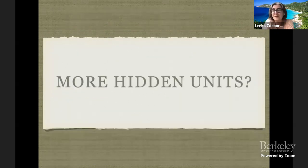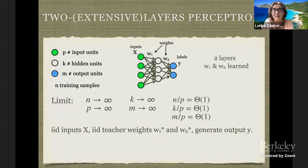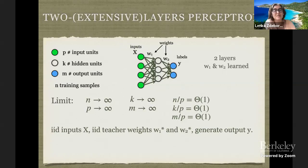So far we were dealing with order-one hidden units, but that doesn't seem to get us very far towards more state-of-the-art deep learning, where we have many layers that are wide and sometimes very wide. Can we deal with more hidden units? A setting we should be able to solve with the replica method would be the following: I restrict to a single hidden layer, but now I don't make it small. I make it extensive — its size K will also go to infinity with a fixed ratio between K and P.